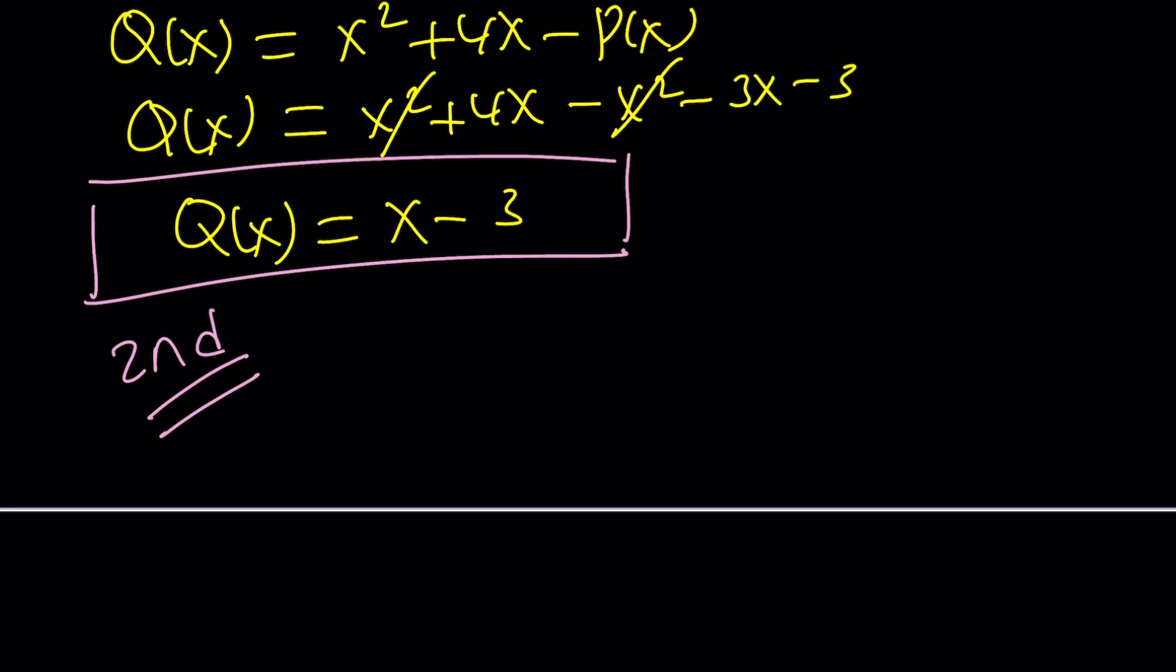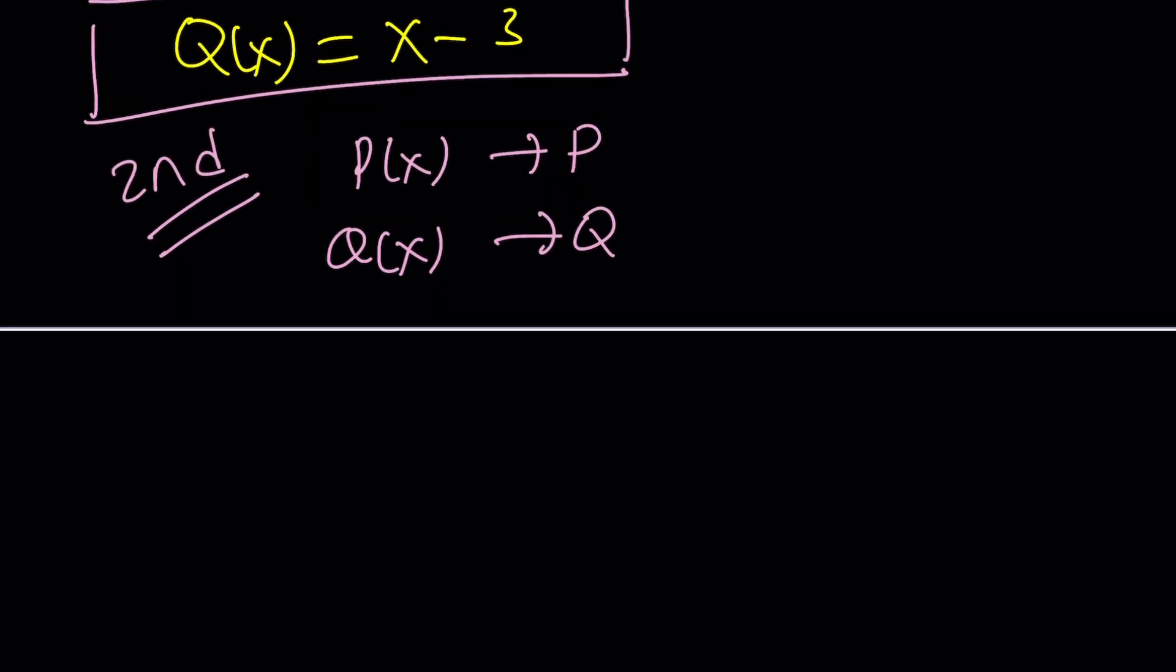For my second method, I'm going to use a really nice identity. Would it be okay if I just replace P(x) with P and Q(x) with Q? That'll save me some time.